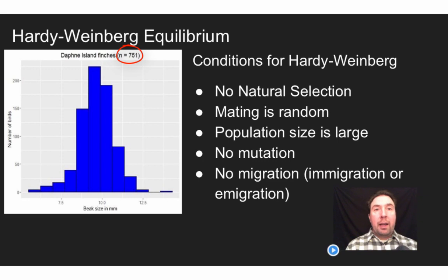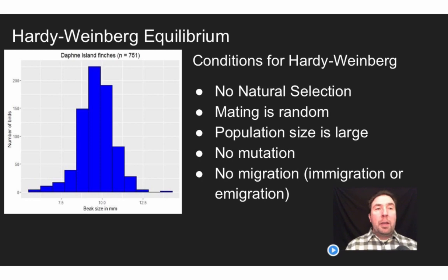The population size would have to be large — ideally the larger the less evolution would take place. Here we see n = 751 birds counted, and it's an interesting question whether this is large enough to be in equilibrium. There can be no new mutations, since mutations are the raw materials of evolution, meaning no new alleles coming in. There also can be no migration — no genes can leave through emigration and no new genes can enter through immigration. These are our five Hardy-Weinberg criteria.